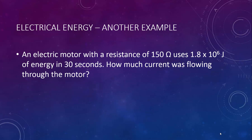Here's another example. An electric motor with a resistance of 150 ohms uses 1.8 times 10 to the 6 joules of energy in 30 seconds. How much current was flowing through the motor? If you're not sure where to start, make a list of givens to figure out which equation to use.